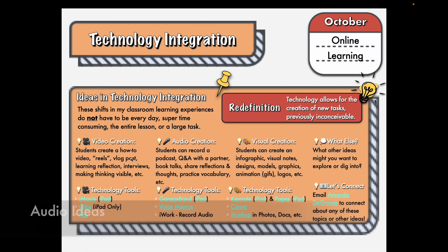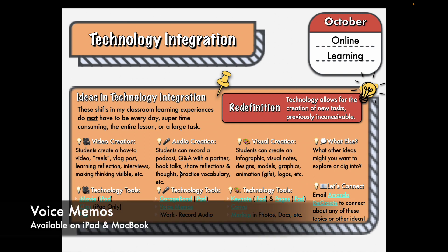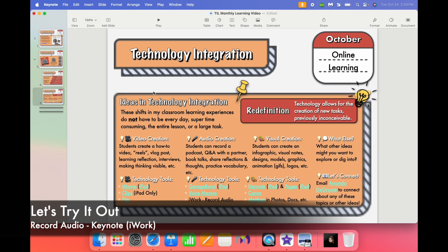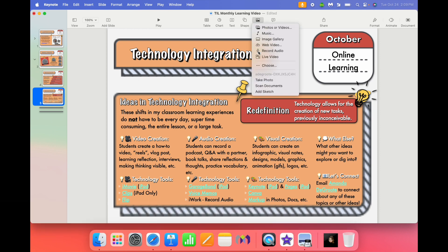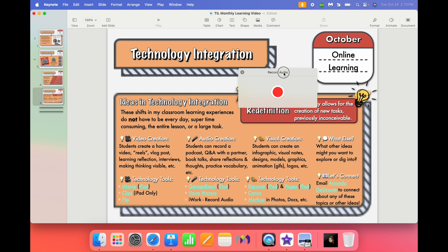For audio creation, you can do a bigger project like a podcast, but it could also be something really small — a question-and-answer session with a partner, thinking through their thought process, a book talk, a reflection, or practicing vocabulary verbally. You can do that in GarageBand, or even just open a voice memo. I'll show you in Keynote — I just click on Media and then Record Audio. This is how you could do a quick audio reflection and then export it as a video.